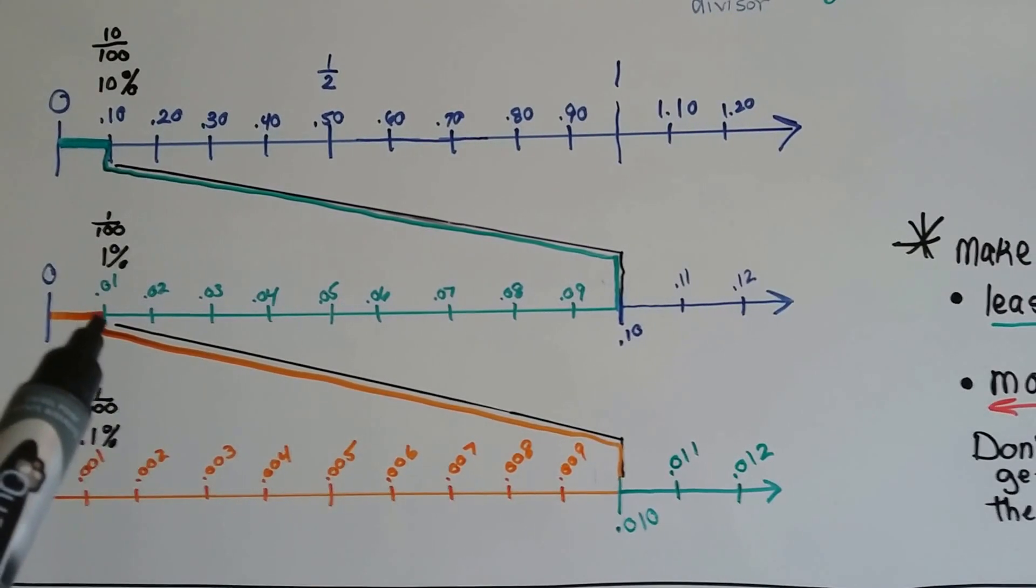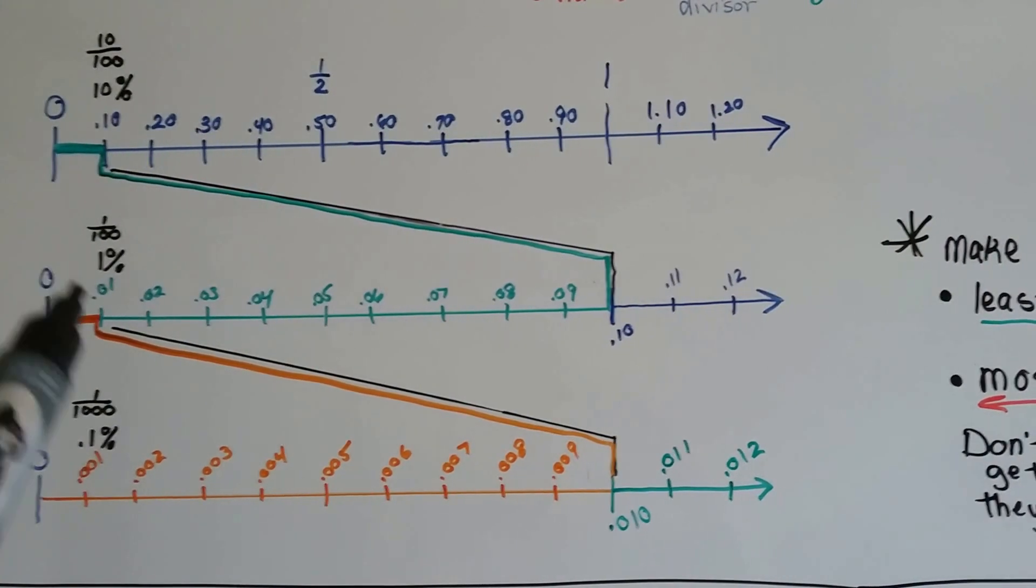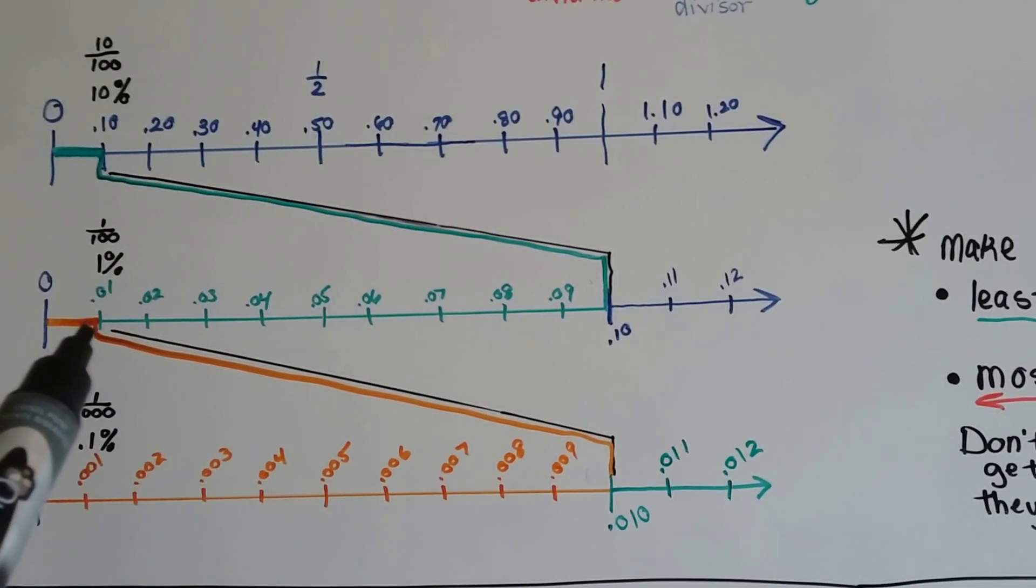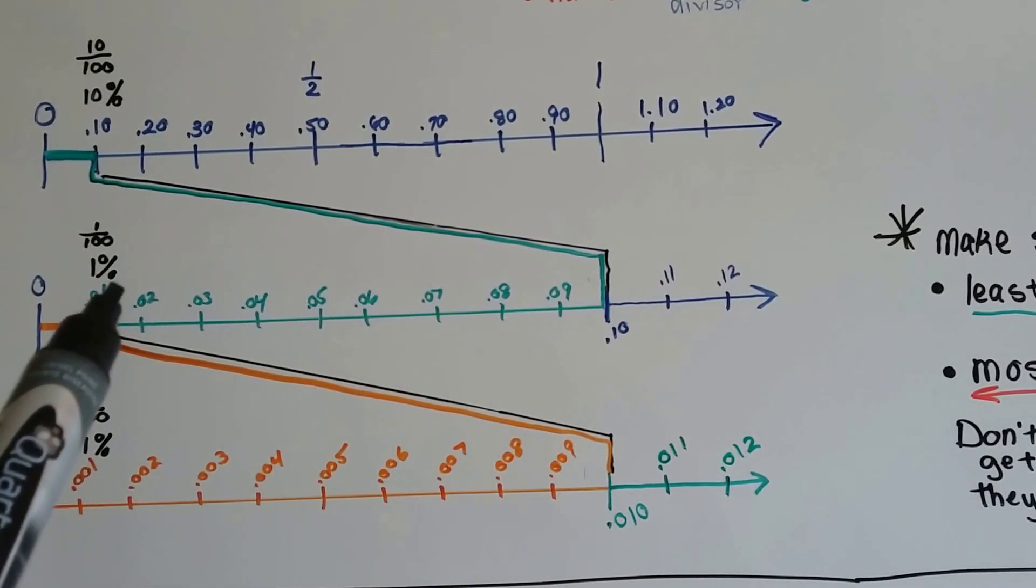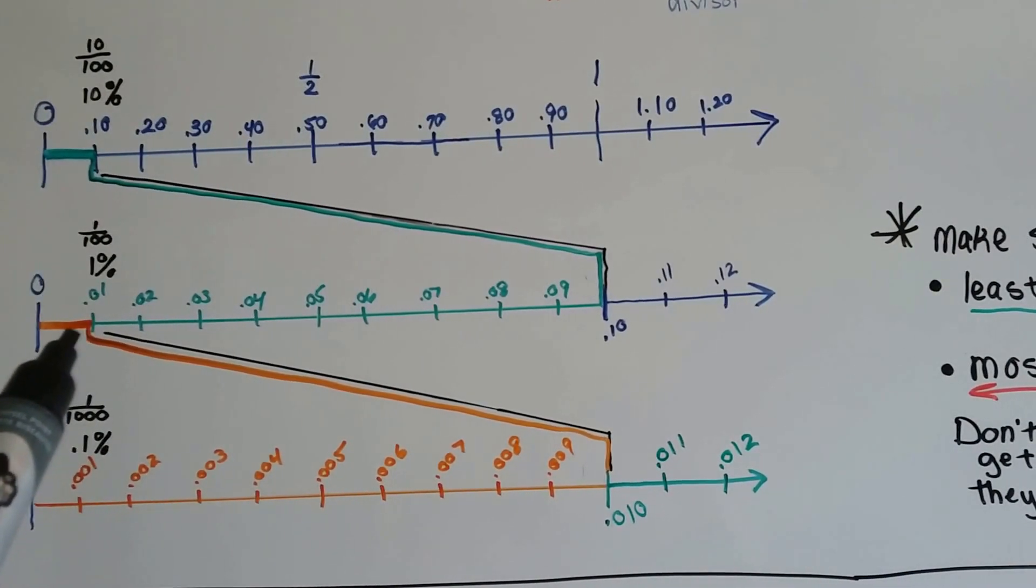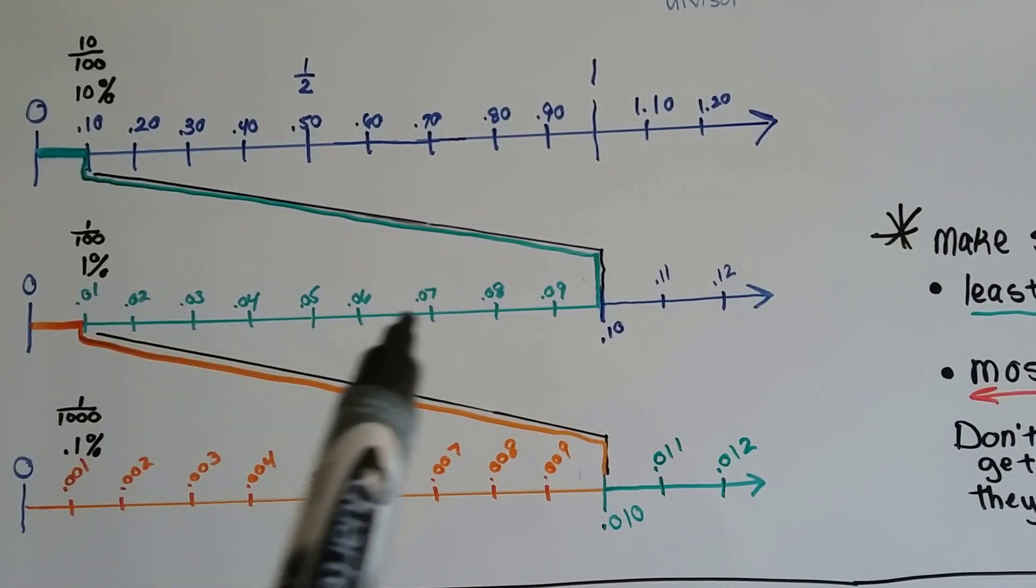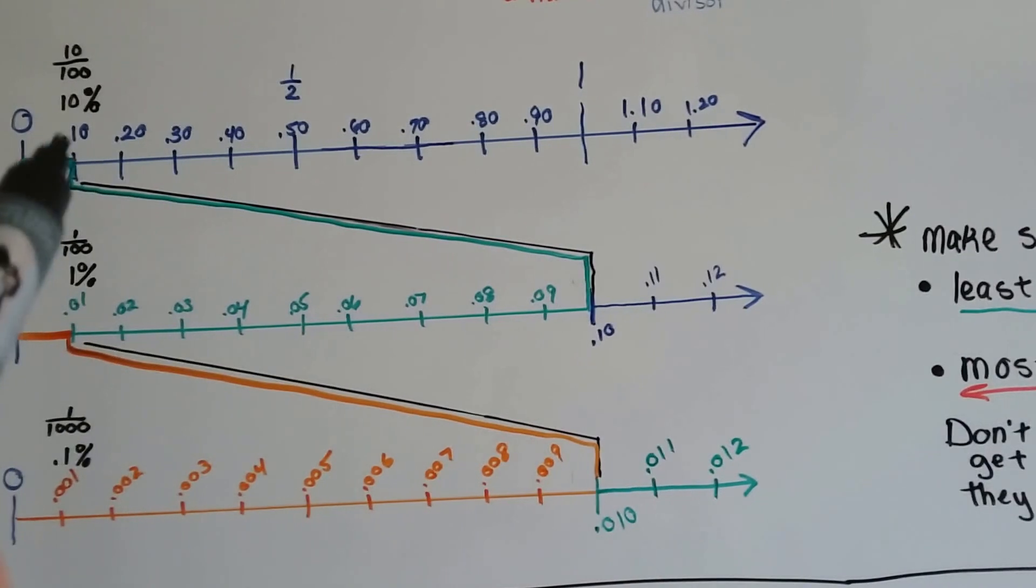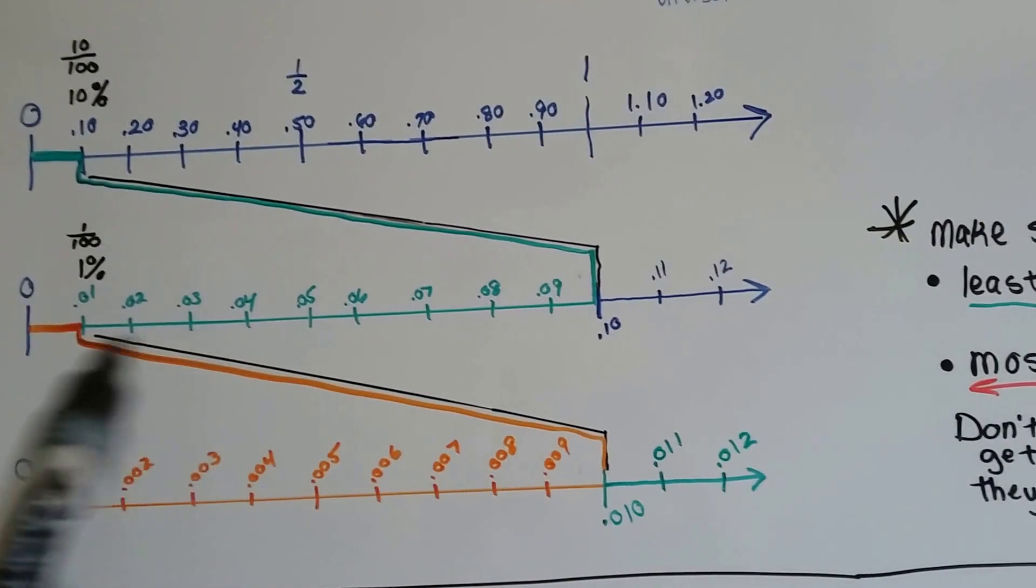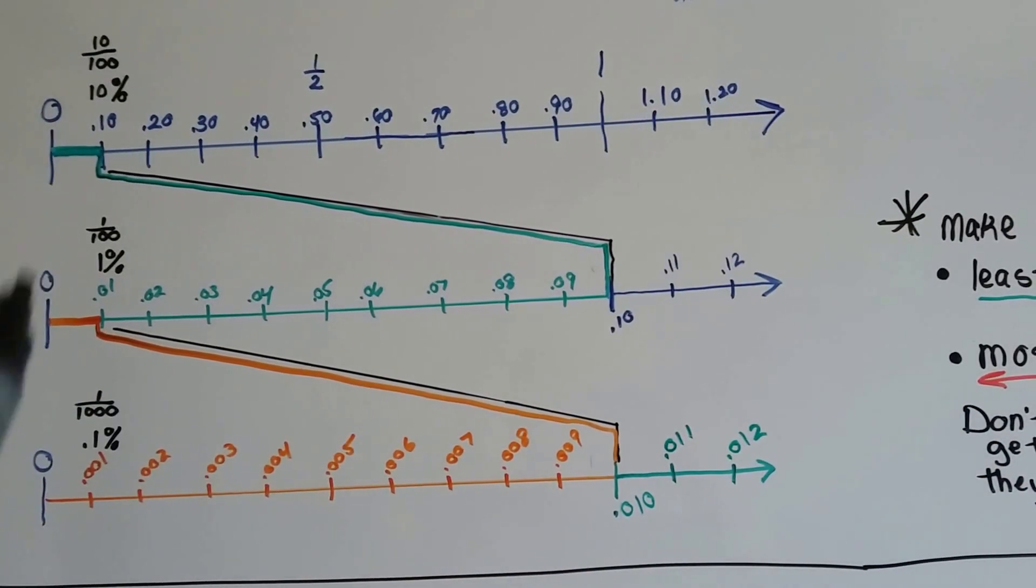So now this is 1 percent. This one was 10 percent. This one's 1 percent, it's one hundredth, 0.01. And then we can see that this mark right here, this 0.10, is actually this one here. And this is what it looks like inside of that little tiny green space.